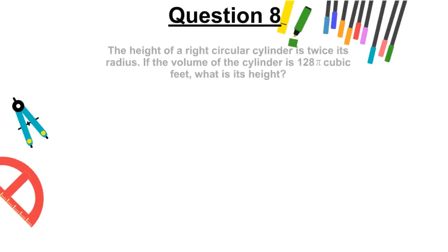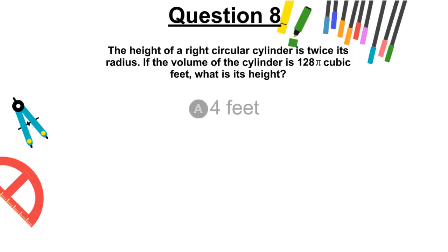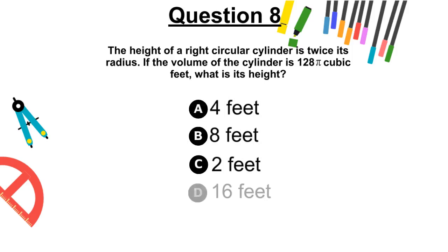Question 8. The height of a right circular cylinder is twice its radius. If the volume of the cylinder is 128π cubic feet, what is its height? A, 4 feet, B, 8 feet, C, 2 feet, or D, 16 feet.